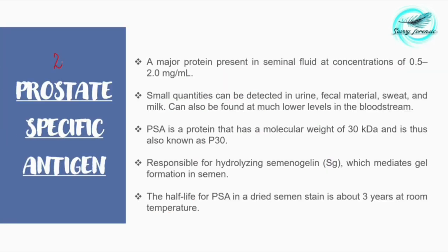The second major constituent present in the prostatic fluid is prostate specific antigen (PSA). It is a major protein present in seminal fluid at concentrations of 0.5 to 2.0 mg per ml. Small quantities can also be detected in urine, fecal material, sweat, and milk.